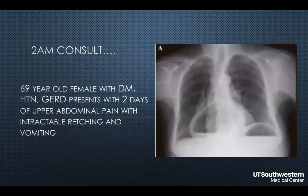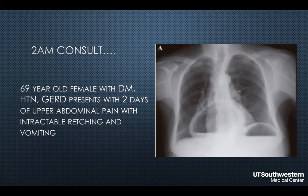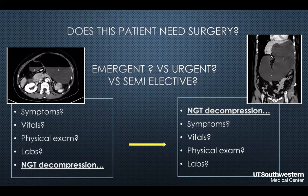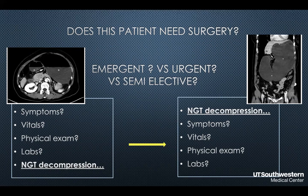Inevitably, we always get called at 2 a.m. from the ER — often something like a 69-year-old female with diabetes, high blood pressure, and reflux presenting with a two-day history of upper abdominal pain with intractable retching and vomiting. We have a chest x-ray and CT scan showing an acute gastric volvulus. The first question is: does this patient need surgery, and does she need it right now? NG tube decompression can really change the operation from an emergent one to a semi-elective one.